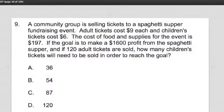With word problems, you not only want to read it but you want to visualize what you're seeing. So first I'm going to read it. A community group is selling tickets to a spaghetti supper fundraising event. Adult tickets cost $9 each and children's tickets cost $6. The cost of food and supplies for the event is $197. If the goal is to make a $1,600 profit for the spaghetti supper, and if 120 adult tickets are sold, how many children's tickets will need to be sold in order to reach the goal?